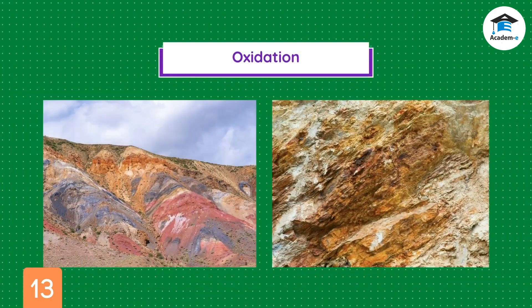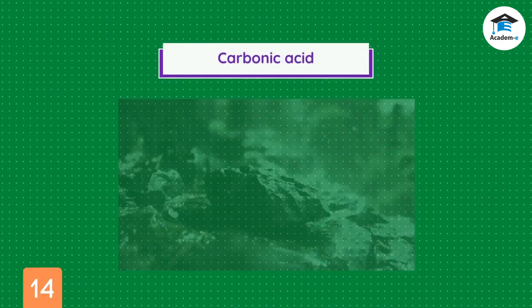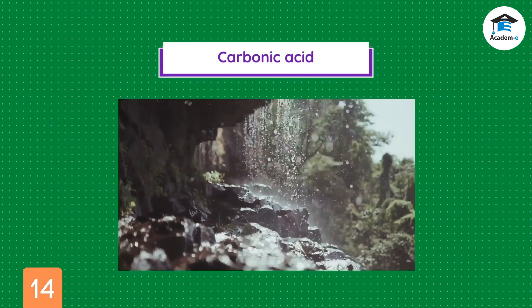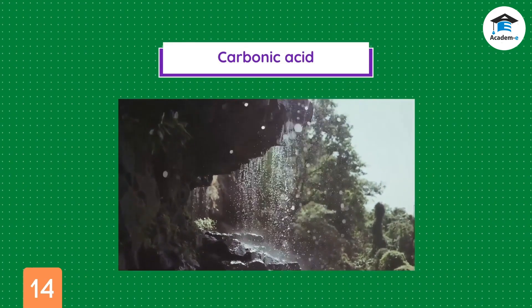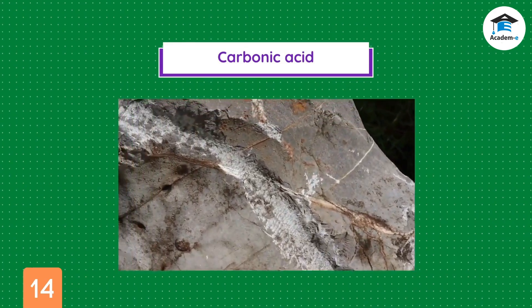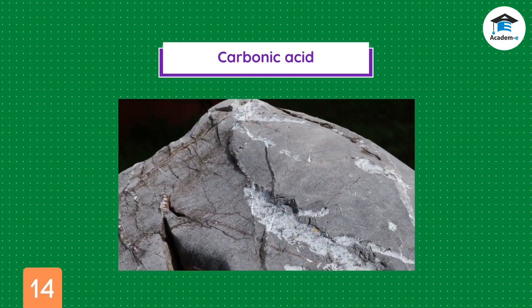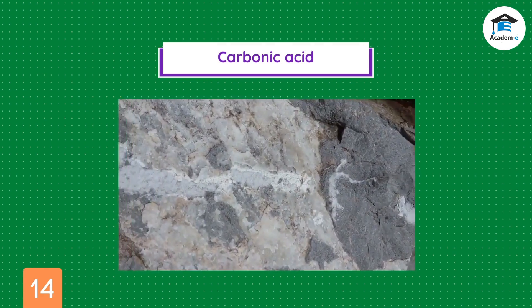Some rocks contain the element iron. When these rocks are exposed to air, the iron combines with oxygen to form iron oxide, or rust. This process is called oxidation. Rust weakens the rock, causing it to eventually crumble. When rainwater reacts with carbon dioxide in the air, carbonic acid is formed. While carbonic acid is a weak acid, it can still break down rocks — particularly limestone and marble — slowly dissolving parts of the rocks and causing them to break apart.